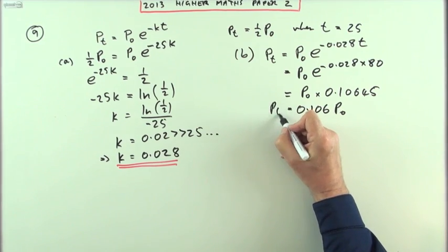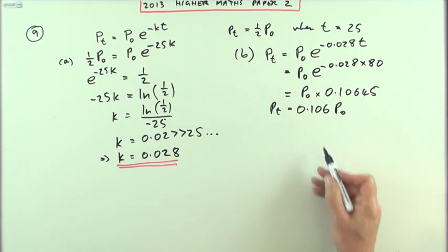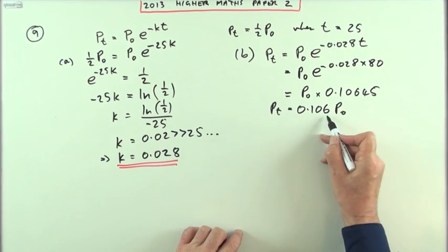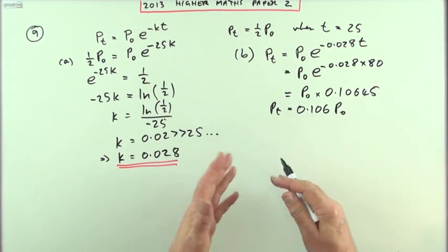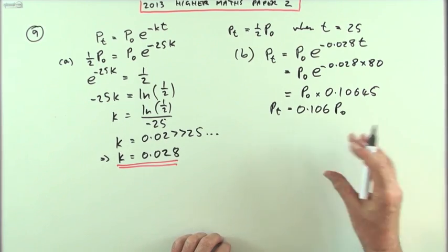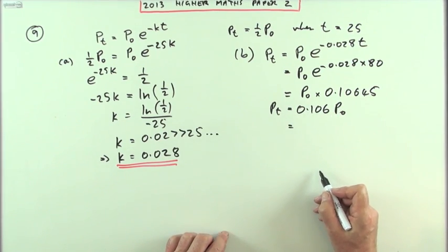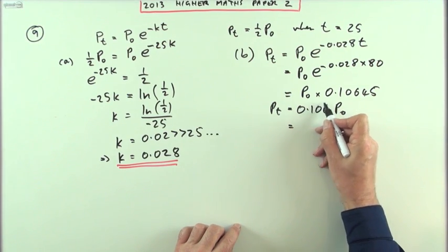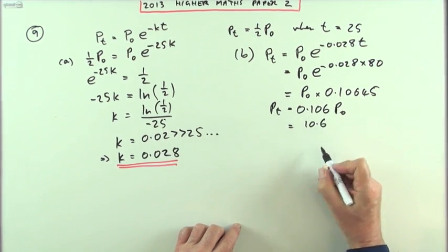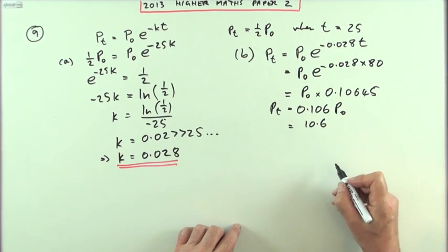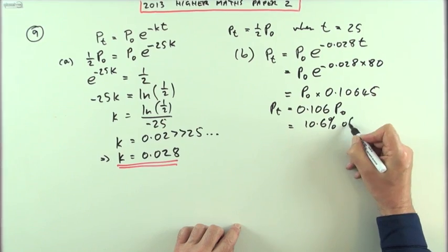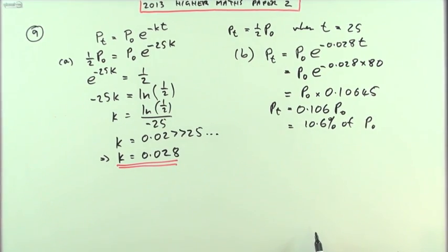Now it's a matter of the interpretation of that. What does that mean? That's a decimal fraction. I could rewrite that as a fraction in any of its other forms. I could write it as a common fraction, could write it as a percentage, it wants it as a percentage. So that written as a percentage would mean that I've got 10.6 over 100. So it's 10.6%. I've got 10.6% of p0 left.